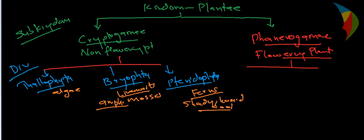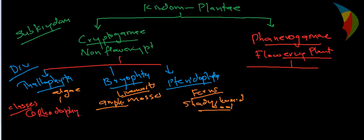So these are the three divisions of non-flowering plants. Under Thallophyta, we can further divide it into classes. The first class is Rhodophyceae — red algae come under this. The second class is Phaeophyceae.